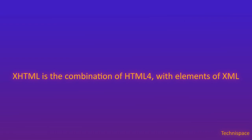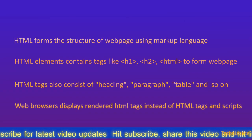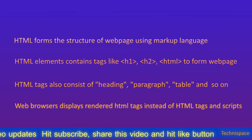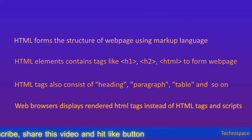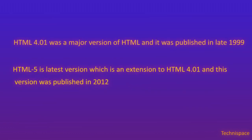XHTML is the combination of HTML 4.01 with elements of XML. HTML elements form the structure blocks of all websites. HTML elements contain tags like h1, h2, and others to form web pages. HTML tags also consist of headings, paragraphs, tables, and so on.